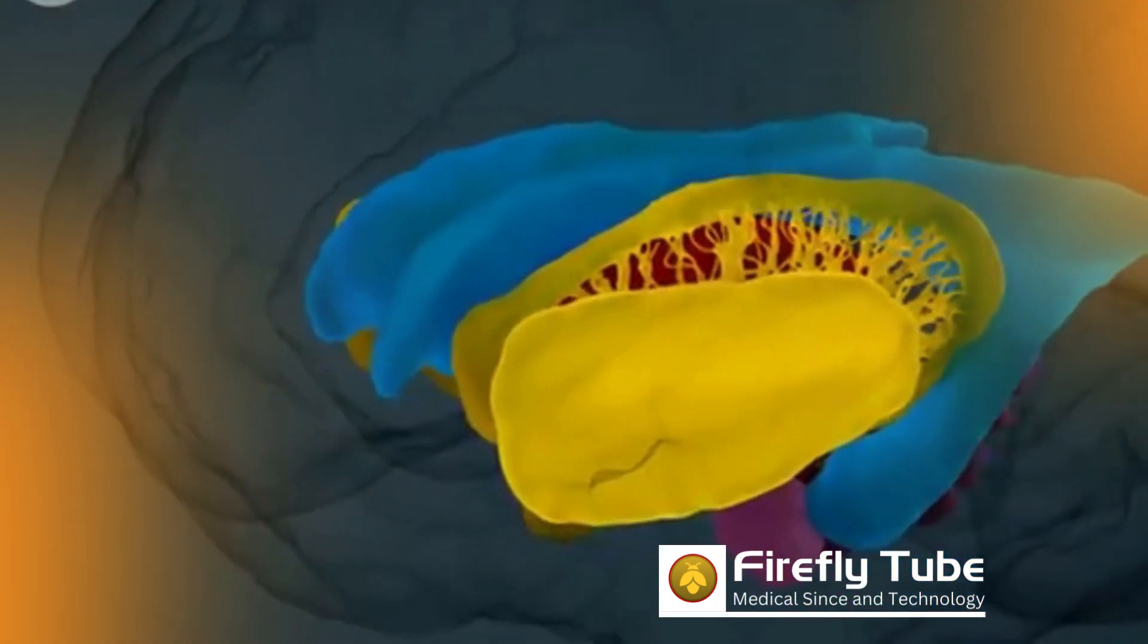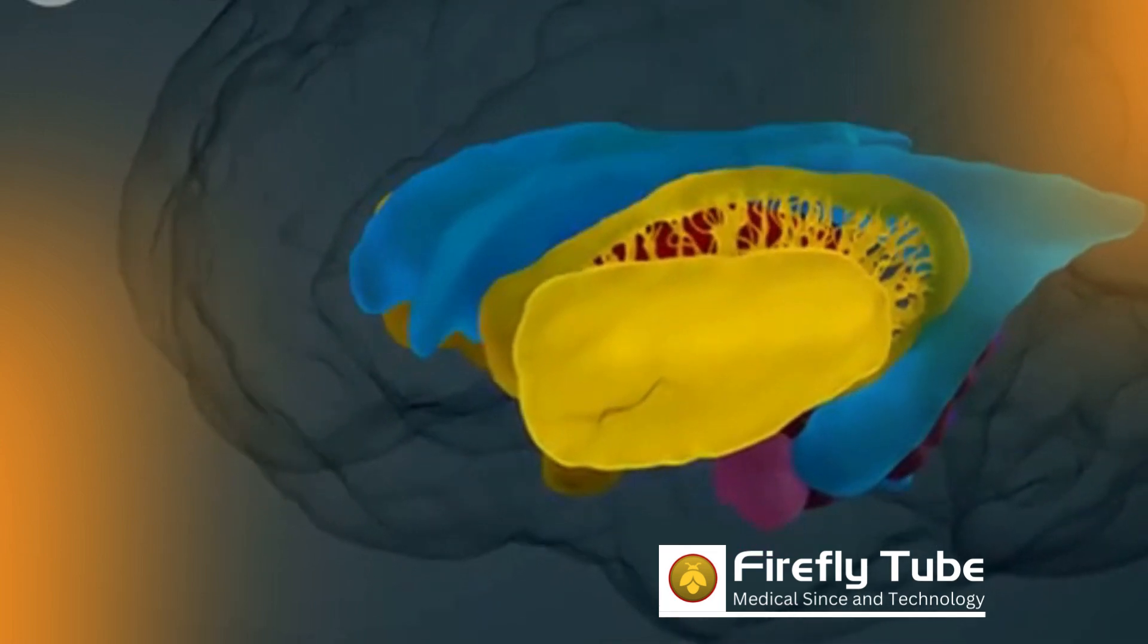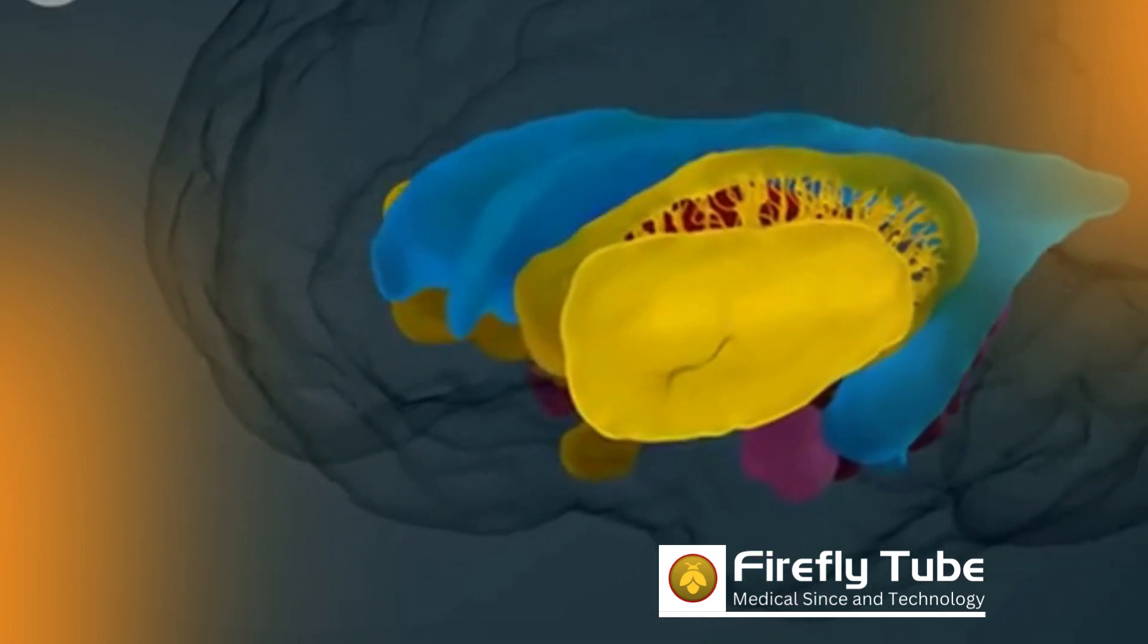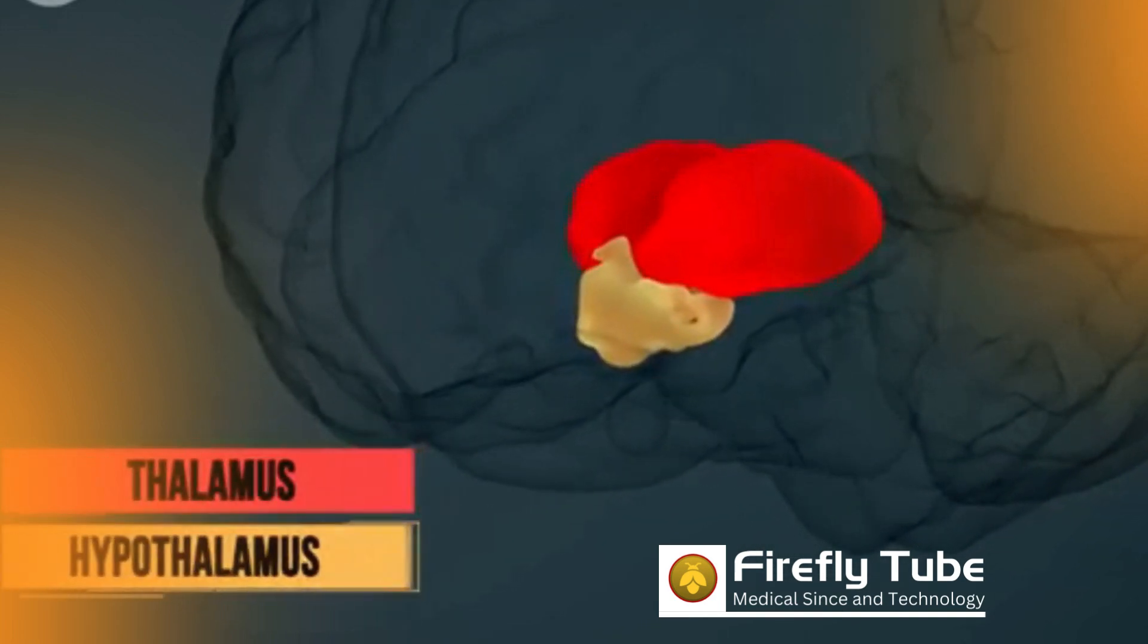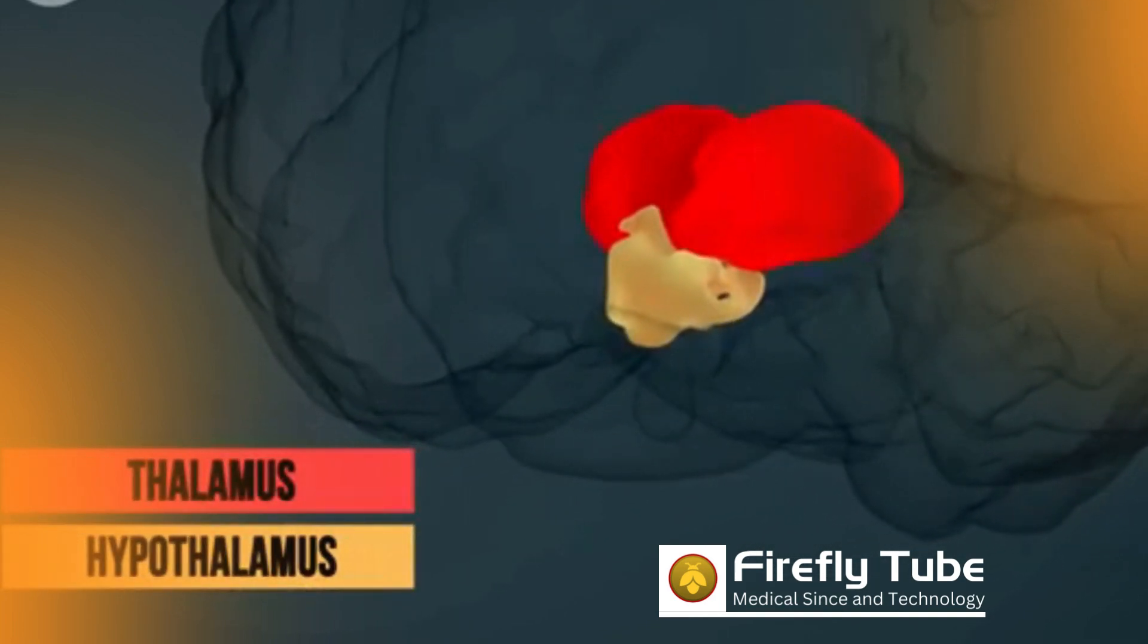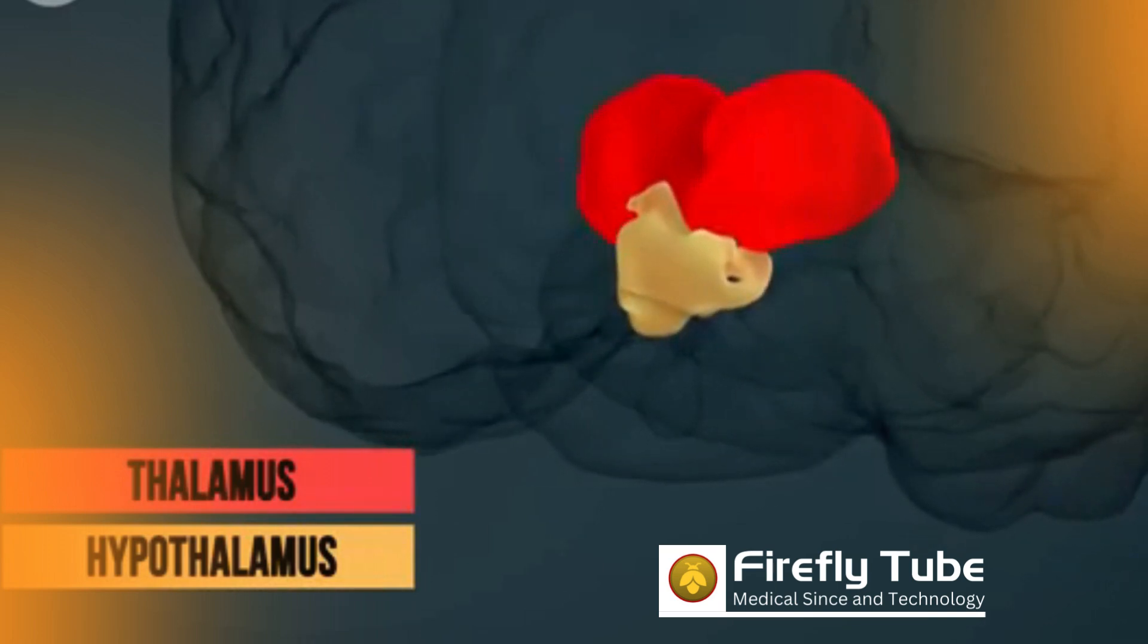Let's take a look at some other areas of the brain that are responsible for very specific tasks. One very important area is the hypothalamus, which is probably the most important control center of the autonomic nervous system.